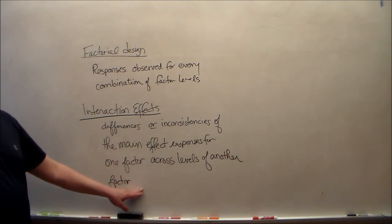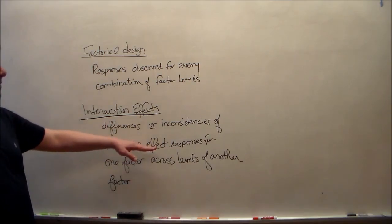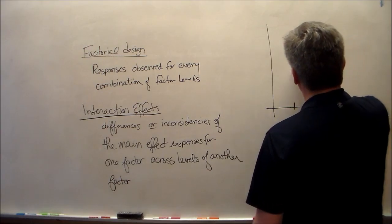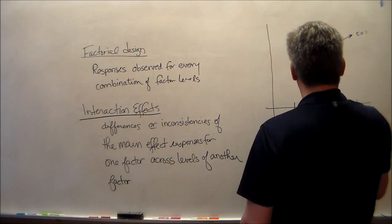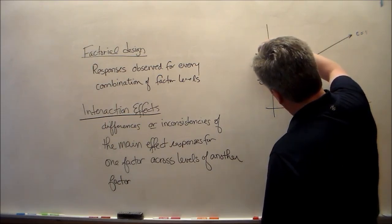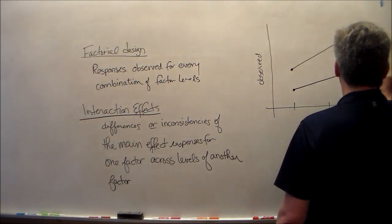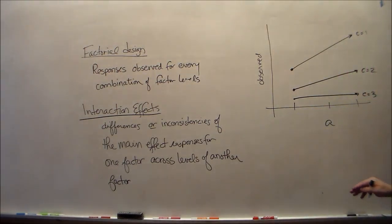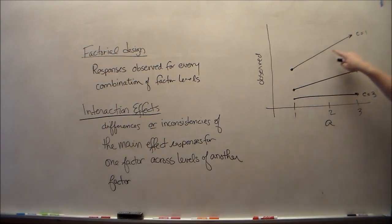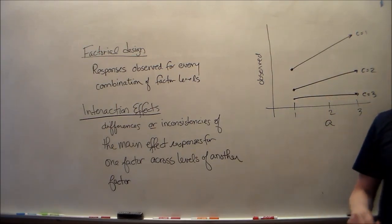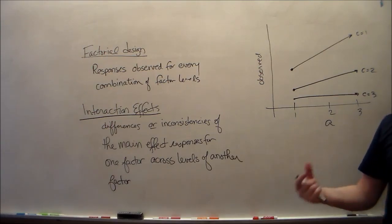If both variables change simultaneously, you're looking at something called interaction effects. The interaction effect describes the differences or inconsistencies in the main effect of one factor across the levels of one or more other factors. In our example, it's how much the effect of A changes with respect to a changing C.